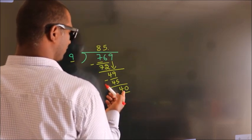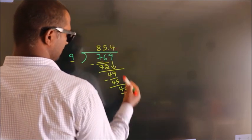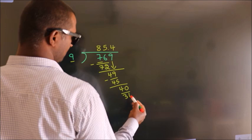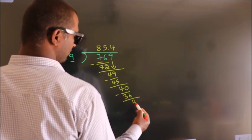A number close to 40 in the 9 table is 9 times 4, which is 36. Now we subtract, and we get 4.